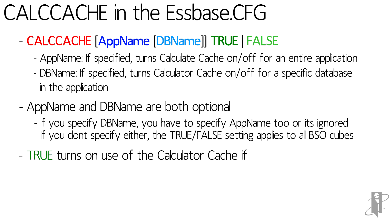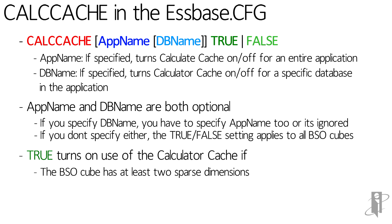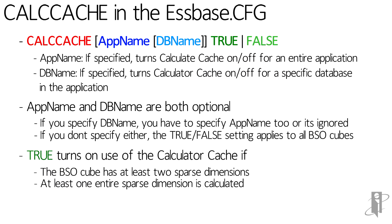If you set calc cache to true, it's going to turn on the calculator cache provided two things are true. One, your BSO cube being calculated has to have at least two sparse dimensions, and you have to be calculating at least one entire sparse dimension. There's a minor exception: if you set cache equal to all inside of your Essbase calc script, you don't have to calculate an entire sparse dimension. The default is true.